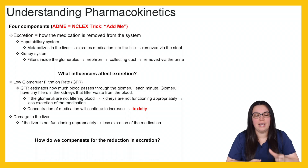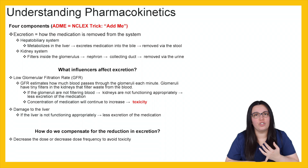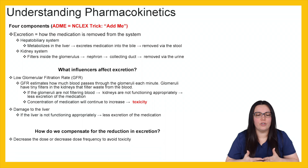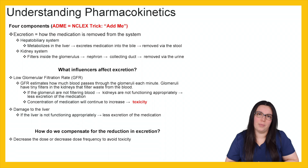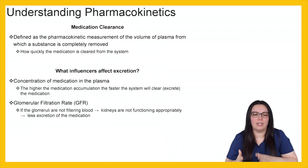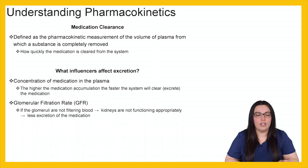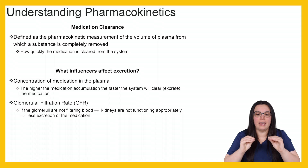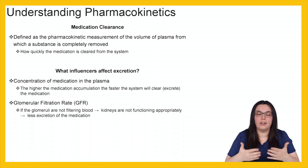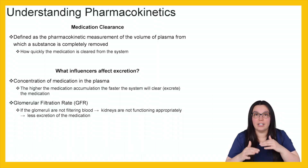So how do we compensate for that reduction in excretion? If we know there is damage to our liver and kidneys, the only thing we can do is decrease the dose or decrease the dose frequency to avoid toxicity in our patients. Medication clearance is defined as the pharmacokinetic measurement of the volume of plasma from which a substance is completely removed — a fancy way of saying how quickly the medication is cleared from the system. Two influencers affect excretion: the concentration of medication in our plasma, and the glomerular filtration rate. The higher the medication accumulation, the faster the system will want to clear it. If the GFR is low and kidneys are not working appropriately, medication becomes less excreted, potentially leading to toxicity.